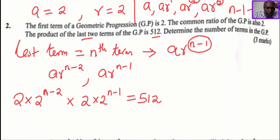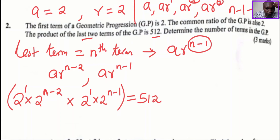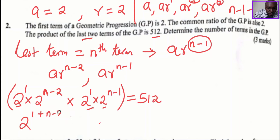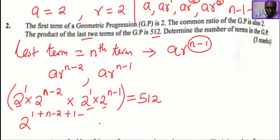Looking at the left-hand side, we're going to apply the knowledge of indices. All the bases are the same, so we add the powers using the laws of indices. We have 1 plus n minus 2, plus 1 plus 1 plus n minus 1, giving 2 raised to that sum of powers equals 512.